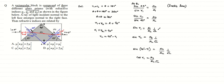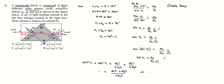Squaring and adding the two equations: sin²r1 + cos²r1 = μ1² / (2μ2²) + μ3² / (2μ2²). The left side equals 1, so 1 = (μ1² + μ3²) / (2μ2²), which gives μ1² + μ3² = 2μ2². This matches option C, which is the correct answer.